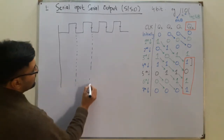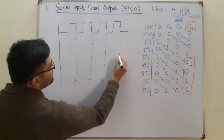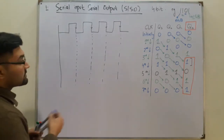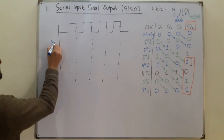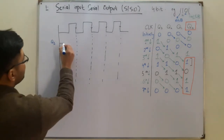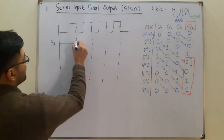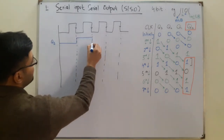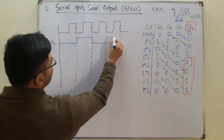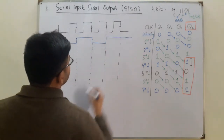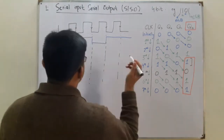This is the first falling edge, the second falling edge, third falling edge, and the fourth falling edge. For Q3 — Q3 was initially zero. When the first falling edge arrived, it comes to one. For the second falling edge it comes to zero, then goes high for the third, and also for the fourth.